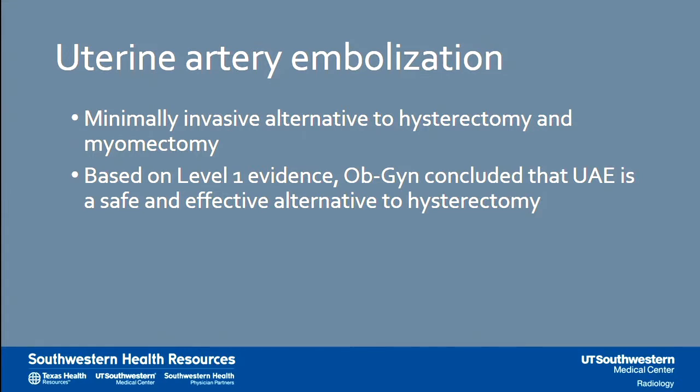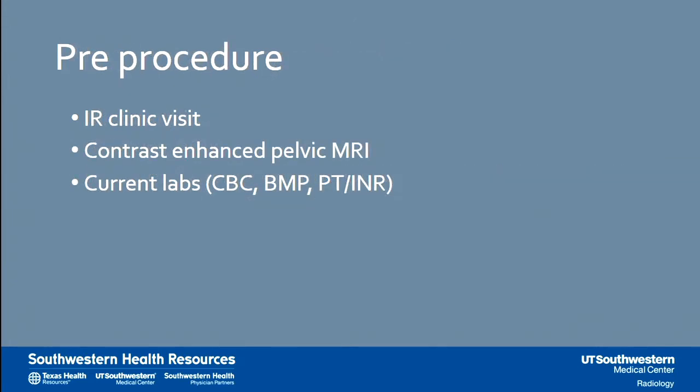Uterine artery embolization is the treatment we provide for these patients. It's a minimally invasive alternative to hysterectomy and myomectomy. The efficacy of the procedure is based on level 1 evidence, and OB-GYNs have concluded it is a safe and effective alternative to hysterectomy. Pre-procedure, patients come to our IR clinic, which is staffed five days a week. If they haven't already had a pelvic MRI, we'll order one for pre-procedure planning — ovarian arteries can hypertrophy and supply fibroids, so knowing that helps treatment planning. We also order necessary pre-procedure labs and explain the procedure.